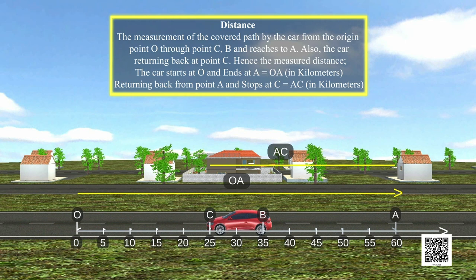The car starts at O and ends at A equals OA in kilometers. Returning back from point A and stops at C equals AC in kilometers.